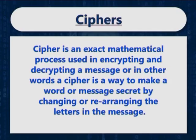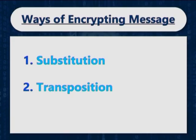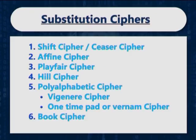Now what is a cipher? A cipher is an exact mathematical process used in encrypting and decrypting a message, or in other words, a cipher is a way to make a word or message secret by changing or rearranging the letters in the message. There are two ways of encrypting a message: either through substitution or through transposition. Some of the common substitution ciphers are shift cipher, affine cipher, playfair cipher, hill cipher, poly-alphabetic ciphers which include Wigney cipher and one-time pad or Vernam cipher, and the last one is book cipher.